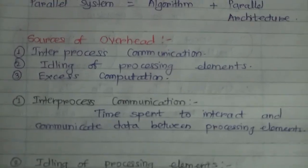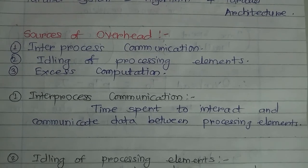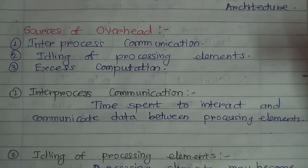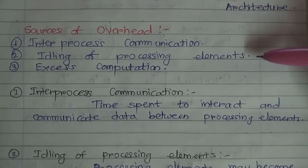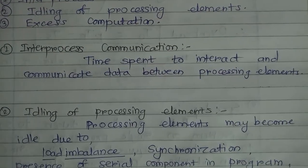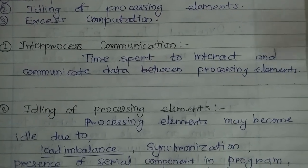There are three types of sources of overhead: inter-process communication, idling of processing elements, and excess computation.